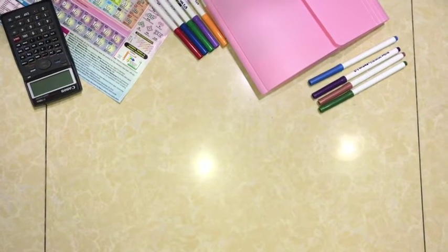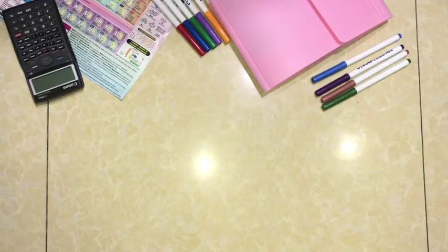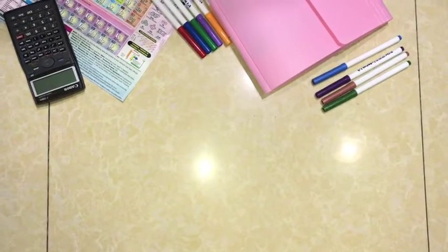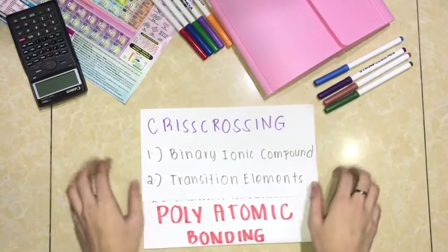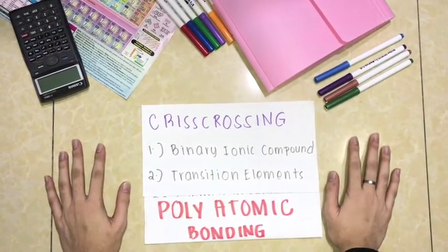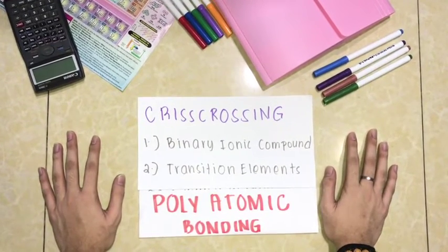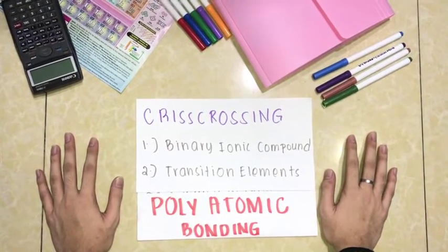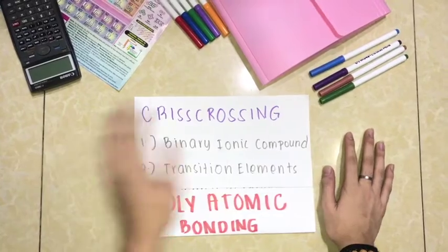How to name and crisscross different elements. In crisscrossing, we have three types: binary ionic compounds, transition elements, and polyatomic bonding.